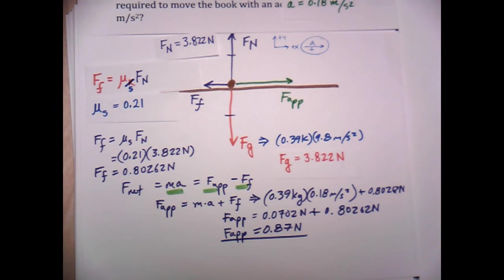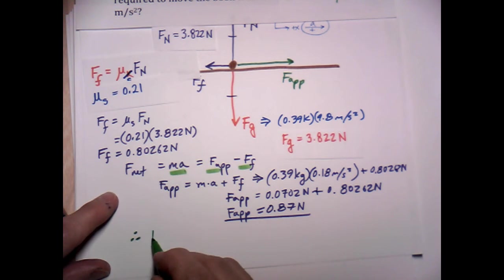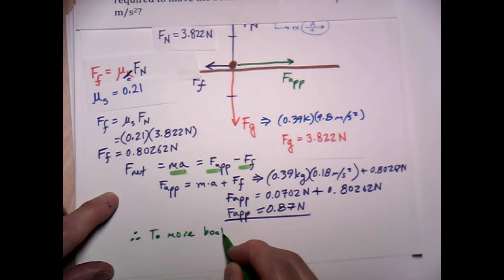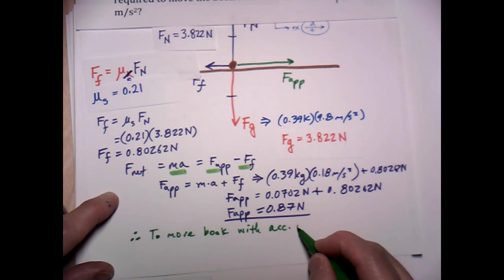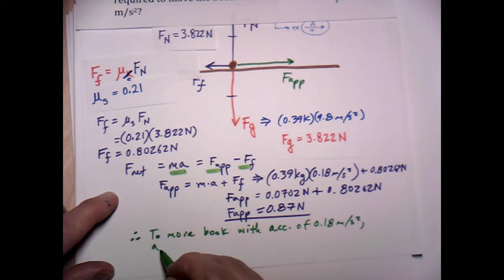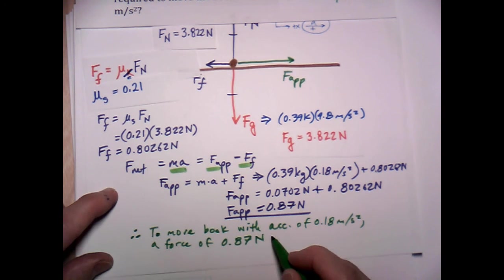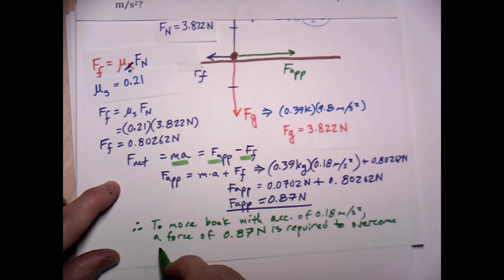And all we need to do is write a therefore statement for this. So therefore, to move the book with acceleration 0.18 meters per second squared, a force of 0.87 newtons is required to overcome static friction.